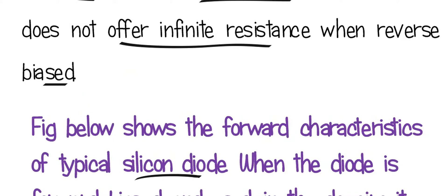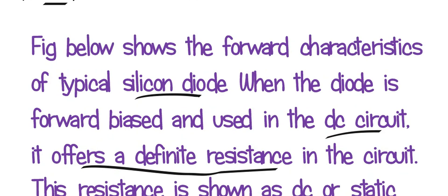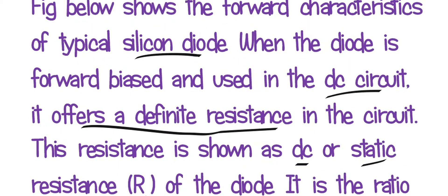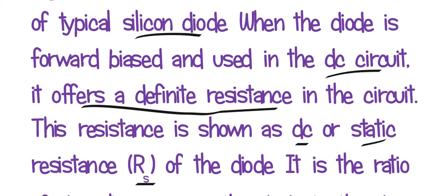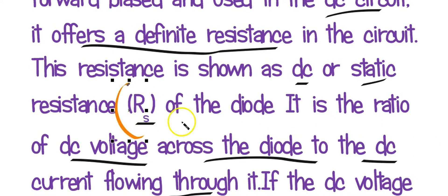Now we are going to explain with a figure. We are choosing a silicon diode. The diode is forward biased and a DC battery is applied. The resistance which we find under DC conditions will be the static resistance.